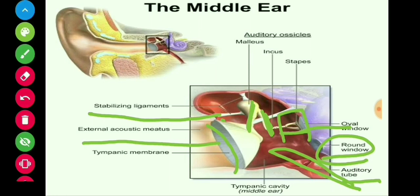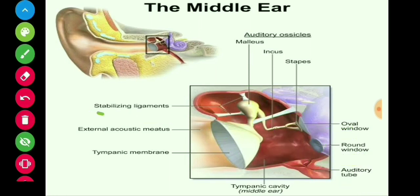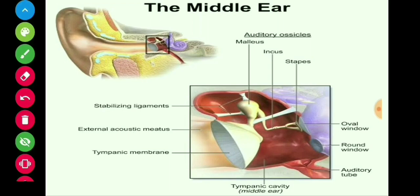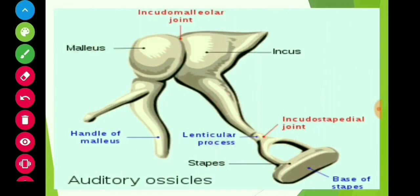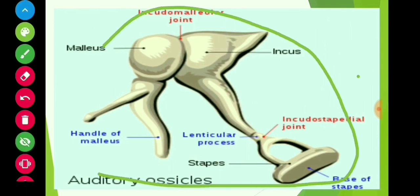There is a stabilizing ligament which stabilizes all three bones — the malleus, incus, and stapes.